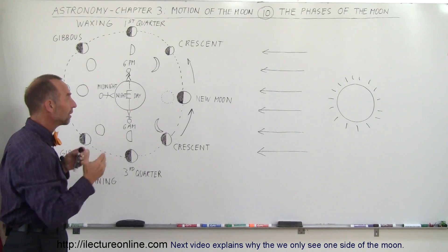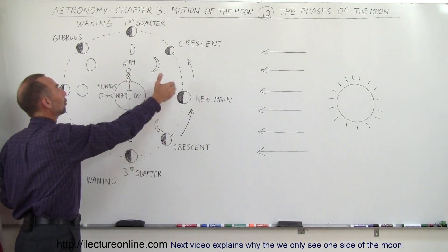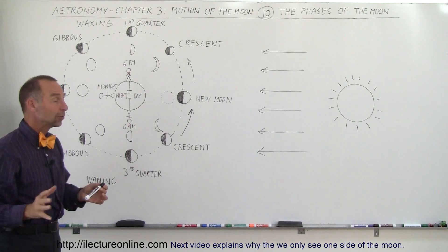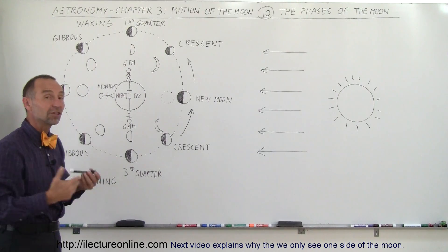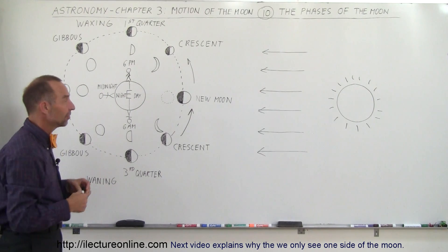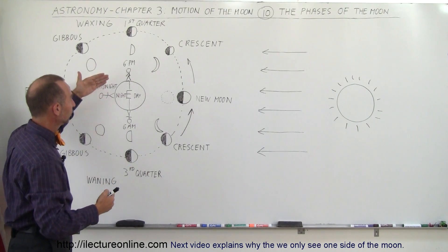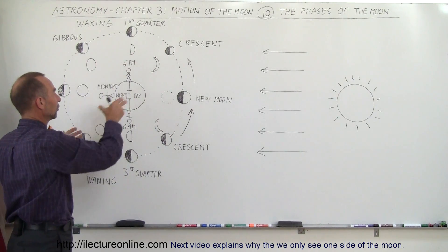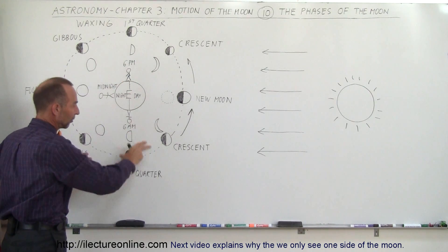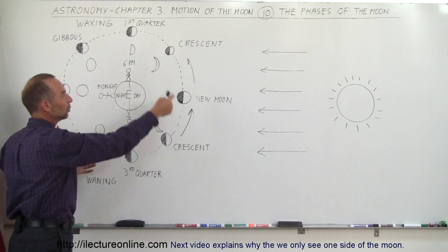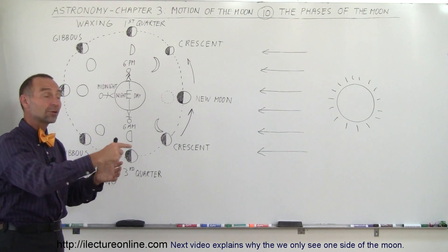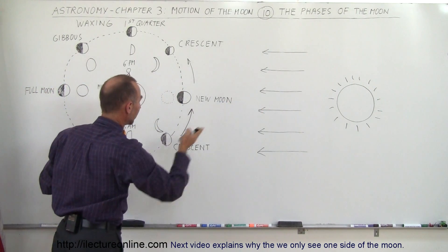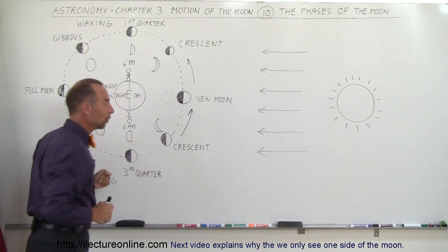The total time it takes for the Moon to go through all of its phases is 29 and a half days, which is called the Synodic Month. It's not relative to stars — it's relative to the Earth and the Sun. Because as the Moon goes around the Earth, the Earth goes around the Sun, and the Moon has to travel more than 360 degrees to get back to the same spot between the Sun and the Earth.